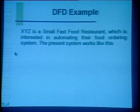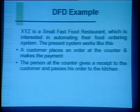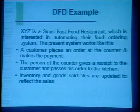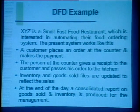In our example, we have XYZ, a small fast food restaurant interested in automating their food ordering system. The present system works like this: a customer places an order at the counter and makes the payment. The person at the counter gives a receipt to the customer and passes the order to the kitchen. At the same time, the inventory and goods sold files are updated to reflect the current sale. At the end of the day, a consolidated report on goods sold and inventory is produced for the management.